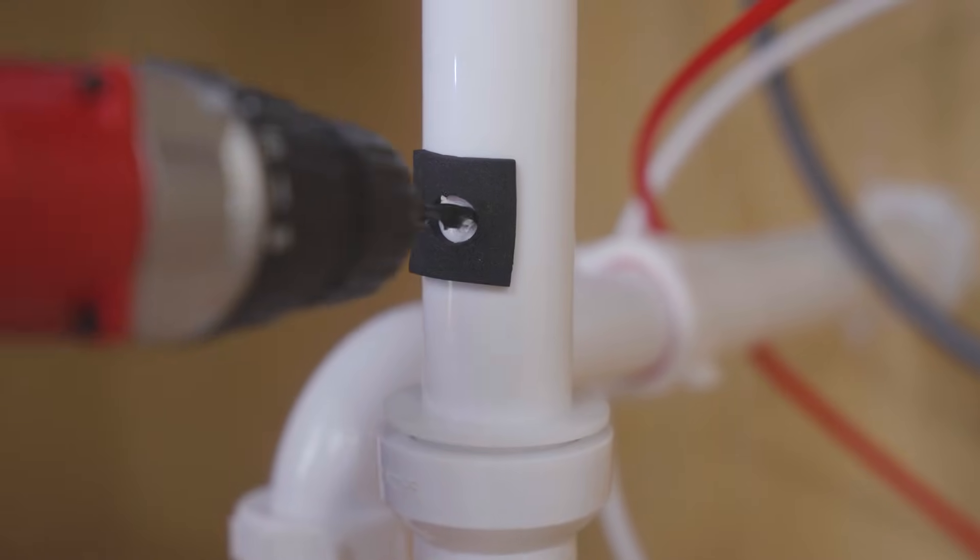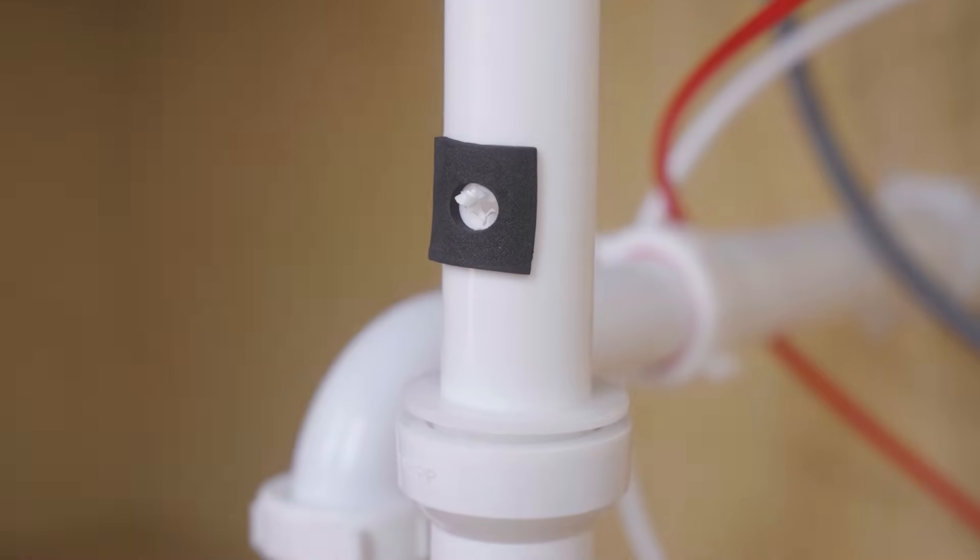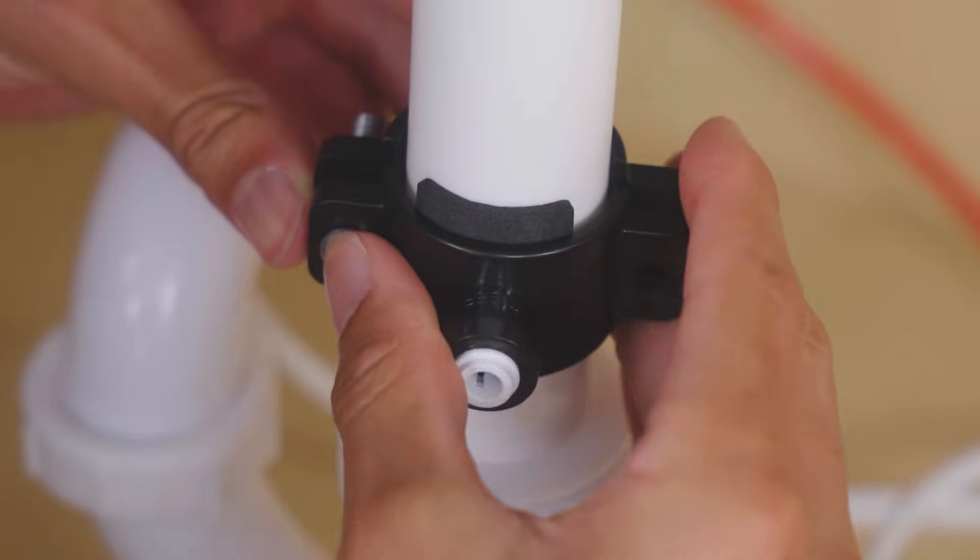Drill a quarter-inch hole in the drain pipe, horizontal or vertical, above the trap. Clamp on the drain saddle and line it up with the hole. Insert the black tubing.